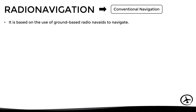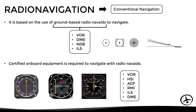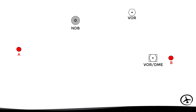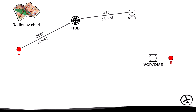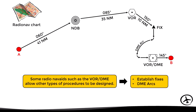Radio navigation is a navigation method for IFR flights that is based on the use of ground-based radio NAVAIDs. The most common NAVAIDs are the VOR, the DME, the NDB, and the ILS. In order to use these NAVAIDs, certified onboard equipment is required. In this example, the aircraft wants to fly from airport A to airport B, and in between there are some NAVAIDs. The radio navigation chart of the area determines the headings, distances, and minimum altitudes to be used for each route segment between the NAVAIDs. In some cases, NAVAIDs such as the VOR DME allow other types of procedures to be designed, such as DME arcs or establishing fixes.